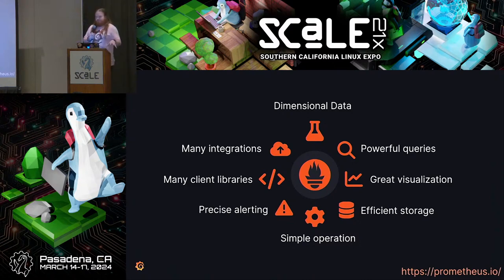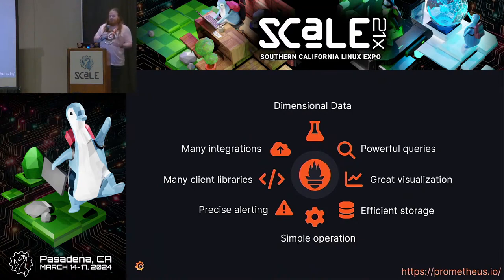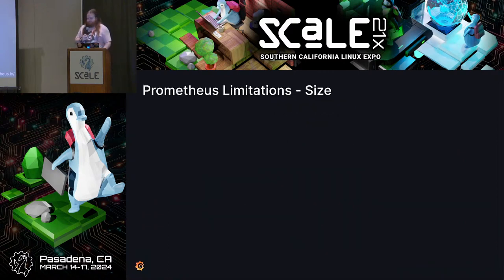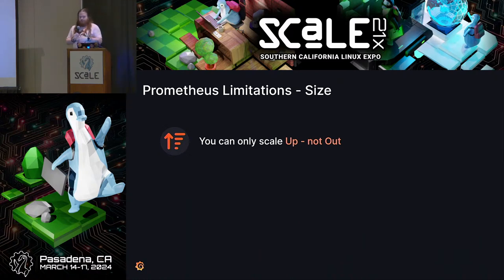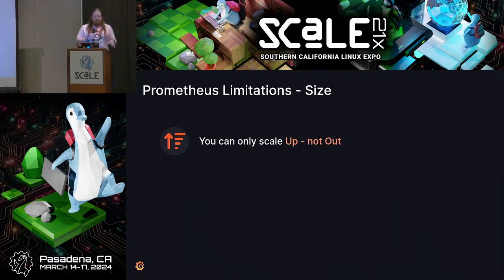Prometheus has some limitations — and these aren't necessarily deficiencies, they're just non-goals of the project. They're not things it was ever set out to solve, leaving those to other solutions. The first is around size. Prometheus is a single process or single machine, which means you can only scale up — you can add CPU, memory, and data — but you can't scale out. You can't run a cluster of Prometheus servers. You can run a HA pair, but that's not a cluster.